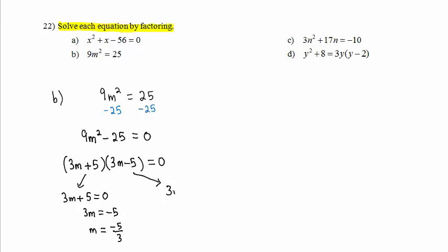Setting the other factor, 3m minus 5 equal to 0, we add 5 to both sides and get 3m equals 5. Dividing both sides by 3, we get m equals 5 thirds, the second solution.